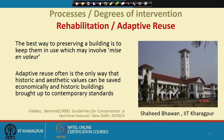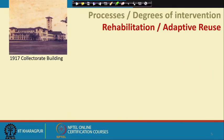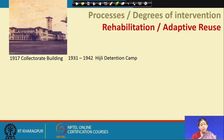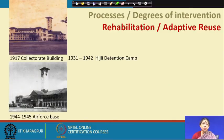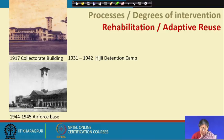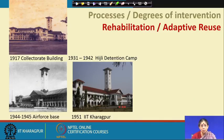For example, the building where IIT Kharagpur started was originally designed in 1917 as a district collectorate, but was never used for that purpose. Later, in 1931–1942, it was used as the Hijli detention camp, then as an air force base during World War II. After independence, when a new system of technological education was established, this building and its surrounding site became the first IIT in India, where IIT Kharagpur started in 1951.